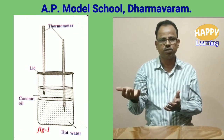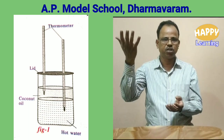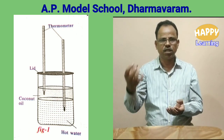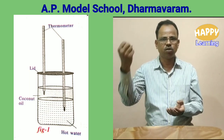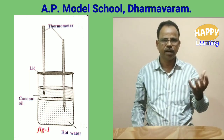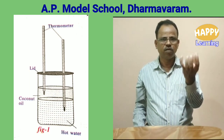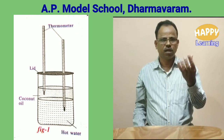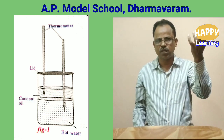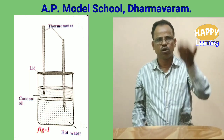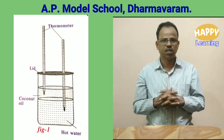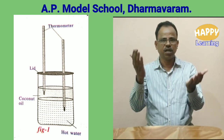So the conclusion is: kinetic energy is the measure of temperature, and temperature is the measure of kinetic energy. Hot water initially has more kinetic energy, so more temperature. As time passes, its molecules lose kinetic energy, so its temperature decreases. On the other hand, initially coconut oil molecules have very low kinetic energy, and as time passes, these coconut oil molecules gain kinetic energy, so their temperature increases. This activity is evidence for the temperature-kinetic energy relation.